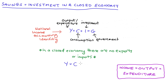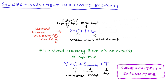Well, we can consume it — that will be C. We can also save — that will be S, and here I'm going to note that this is private savings. Since we're working in an economy where there is a government, some of our income will or might go to taxes as well, so that's T for taxes.